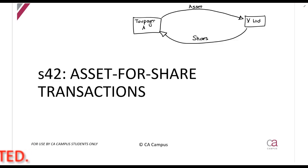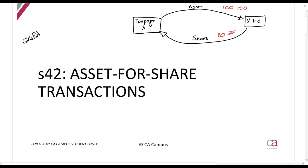First, I want to quickly mention Section 24BA — it covers the same asset for share concept and will apply if the assets and shares are not the same value. For example, if you give a R100 asset and get R80 worth of shares, or give a R150 asset and get R200 worth of shares — those are all rules of Section 24BA. For now, we're looking at a situation where the asset equals R100 and the shares received also equal R100.